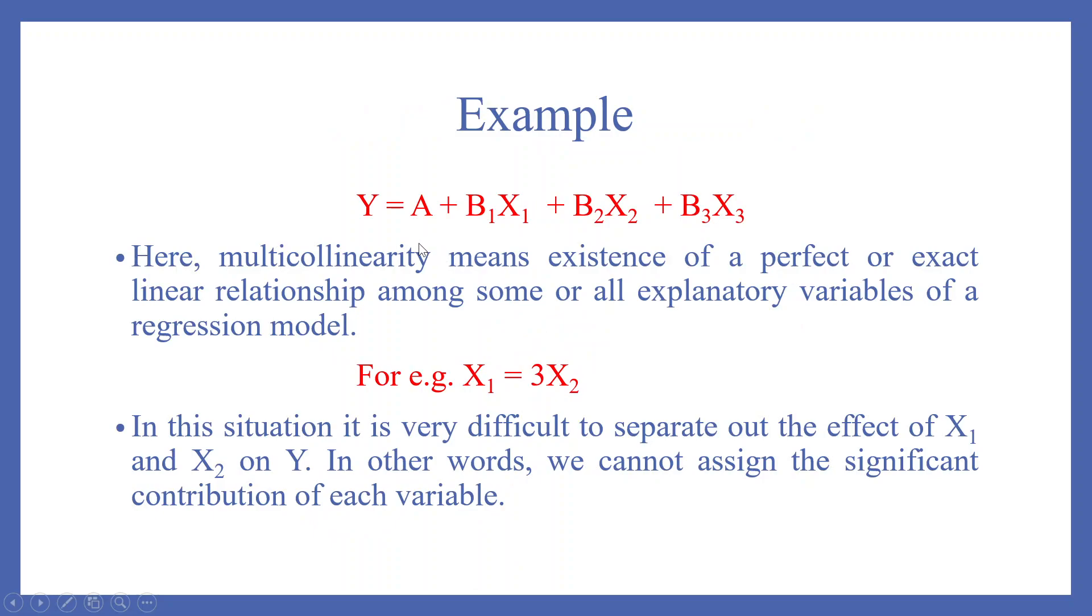Let's take one more example: Y equals A plus B1X1 plus B2X2 plus B3X3. Here multicollinearity means existence of a perfect or exact linear relationship among some or all explanatory variables of a regression model. For example, X1 equals 3X2.